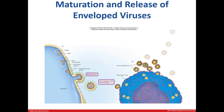On your left, you can see the assembly and maturation of a new virus and you can see it budding from the host cell. This is one way that a virus acquires an envelope. In Figure B, you can see an image of HIV leaving a T cell via budding.